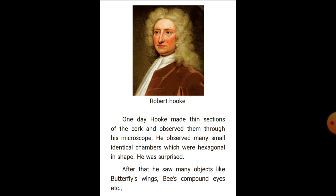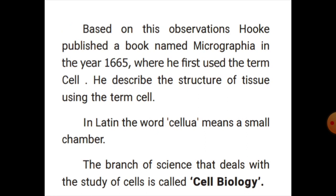The cells were a hexagonal shape, and Hooke was surprised after he saw many objects like butterfly wings, bees' compound eyes, etc. Based on his observations, he published a book named Micrographia in the year 1665, where he first used the term 'cell'. He described the structure of tissue using the term cell. The Latin word 'cellula' means a small chamber. The branch of science that deals with the study of cells is called cell biology.